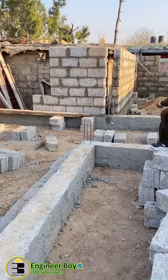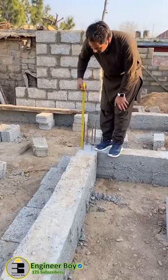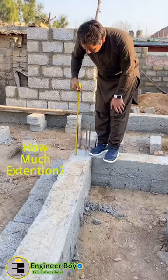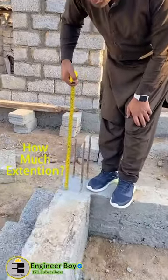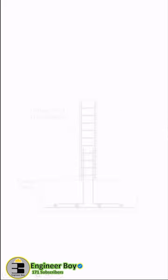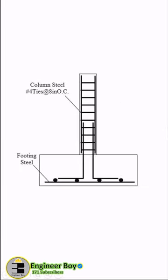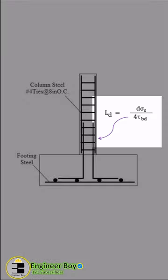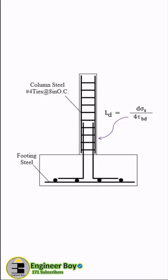Now the question is: how much in length should the dowel bar be extended? I'm Suleyman Khan and you're watching The Engineer Why. The dowel bar must be extended into the column a distance equal to the development length of the column. The development length can be calculated by doing some plug-and-chugging in the formula, though it can still be quite a bit of work.